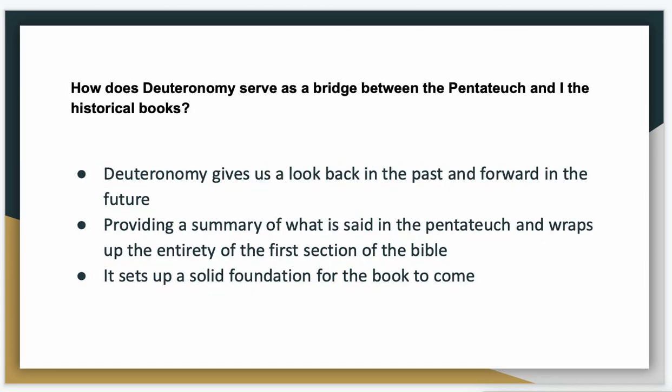The next question I want to tackle is how does Deuteronomy serve as a bridge between the Pentateuch and the historical books? Deuteronomy gives us a look back on the past and forward into the future. This book is great to end on because we get a summary of what has happened in the Pentateuch — it wraps up the entirety of that section of the Bible. It brings the first section of the Old Testament to a close with Moses' speeches looking back and forward, and really sets a solid foundation for the books to come.